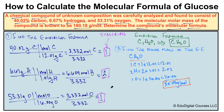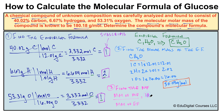In step three, we find the molecular formula. To do this, we divide the molar mass of the molecular formula by the molar mass of the empirical formula: 180.18 ÷ 30.03 = 6. So we get a whole-number ratio of 6.